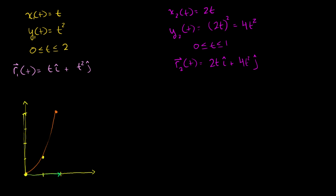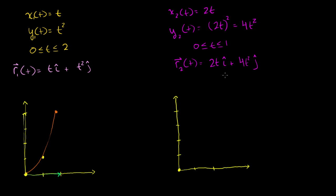If I were to graph this it will look the same, but it's useful to draw it because I'll draw the derivatives on it later. At t equals 0, x and y are both 0. When t equals 1/2, we get 2 times 1/2 equals 1, and (1/2) squared times 4 equals 1, so we're at the point (1,1). When t equals 1, we're at the point (2,4). The path we traverse is exactly the same.